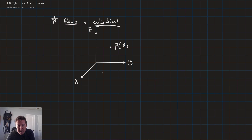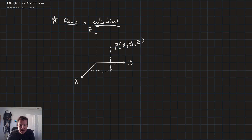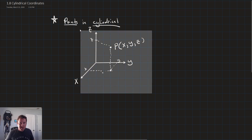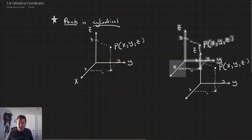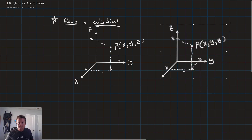We've already been working with points in X, Y, and Z. That point might be at some place in X and Y, coming up to some point in Z. Let's take this and convert it to cylindrical coordinates.